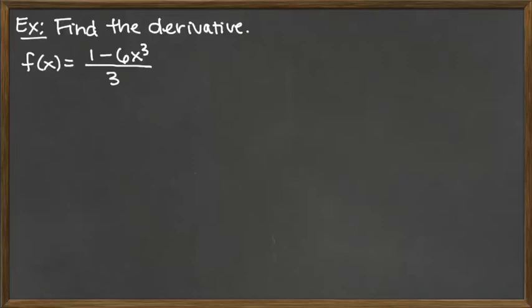The function given here is a quotient. The top of this function is 1 minus 6X to the third power, and the bottom is fairly simple at just a 3, but we want to find the derivative of this.